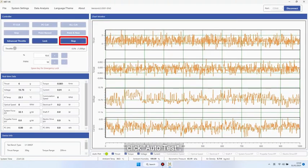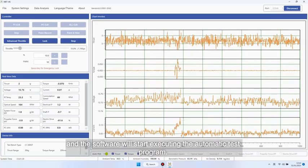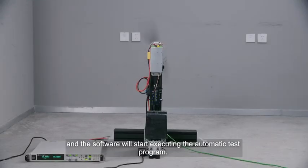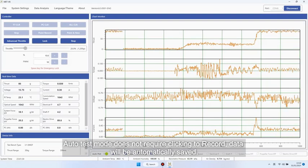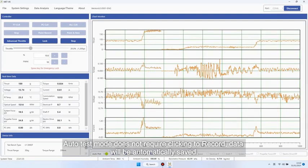Unlock the throttle, click Auto Test, and the software will start executing the automatic test program. Auto Test mode does not require clicking to record. Data will be automatically saved.